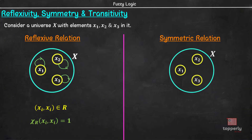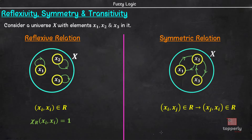Next, we have the symmetric property of relations. In this case, for every edge pointing from element Xi to Xj, there should be an edge pointing from Xj to Xi. For example, suppose there is an edge from X1 to X2, then there should be an edge from X2 to X1. Similarly, if there is an edge from X2 to X3, then there should also be an edge pointing from X3 to X2. So, a relation R is symmetric if (Xi, Xj) belongs to R, then (Xj, Xi) should also belong to R — that is, if the membership value of (Xi, Xj) is equal to 1, then the membership value of (Xj, Xi) should also be 1.